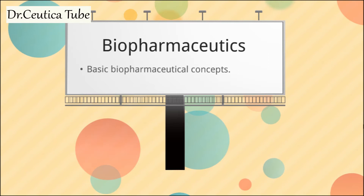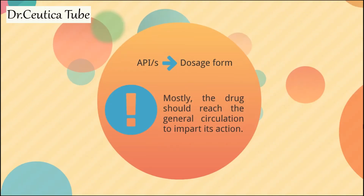Today we will cover some general aspects about drug absorption and illustrate some basic biopharmaceutical terms that will come across the biopharmaceutics theories. We already know that the API, or the active pharmaceutical ingredient, is usually formulated in a certain dosage form which can be taken through various routes of administration. To refresh your memory about this, you can watch the dosage form design video — I'll put a link in the description box for you.